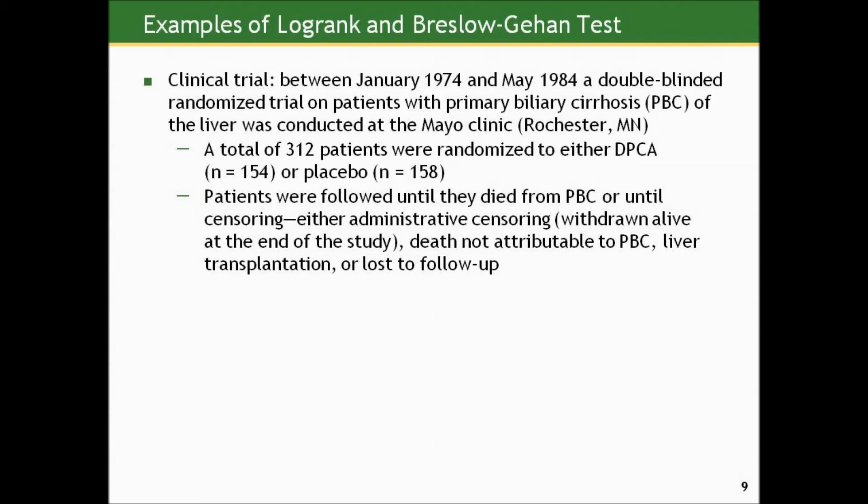A total of 312 patients were randomized to either a drug group — D-PICA, 154 people — or placebo, the other 158. Patients were followed until they died from PBC or until censoring: either administrative censoring, meaning they were withdrawn alive at the end of the study — which is a good thing, it means they were still alive — or death not attributable to PBC, such as dying in a car accident.